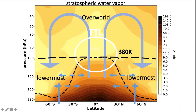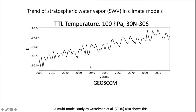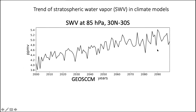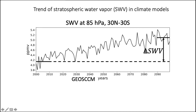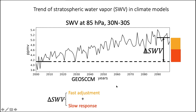If TTL temperatures change, stratospheric water vapor will also change. Climate models under increasing greenhouse gas scenarios predict TTL temperatures will increase over the 21st century, and correspondingly stratospheric water vapor will also increase. We can split the total stratospheric water vapor response — defined as the difference between the last and first decade averages — into two components: the fast adjustment and the slow response. Which component is more important, and why do we need to split them?